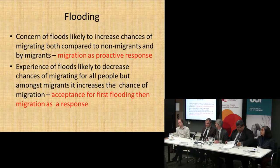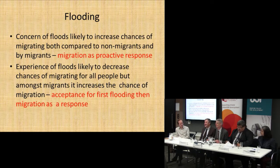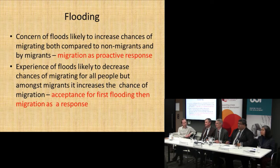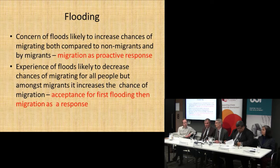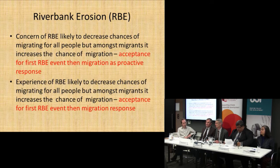Looking at the migration life histories, in some cases people were migrating as a proactive response — when they were worried about floods, not necessarily after experiencing them. So it was a proactive strategy. Looking at riverbank erosion, this came out even more clearly: comparing all people, having experienced riverbank erosion meant you were less likely to migrate. But if you were already a migrant, each time you experienced riverbank erosion you'd be more likely to migrate again.